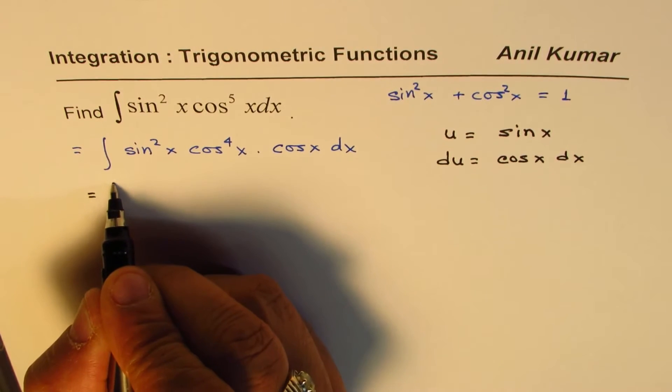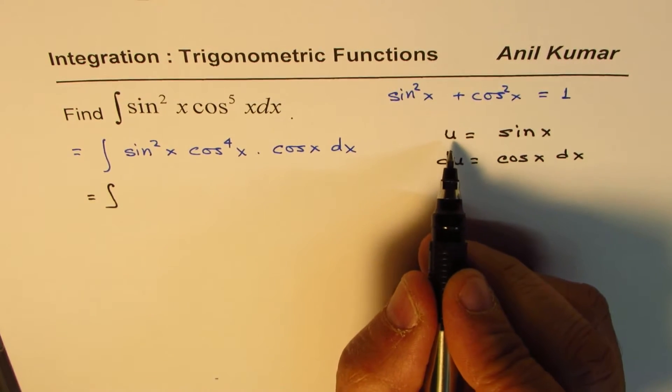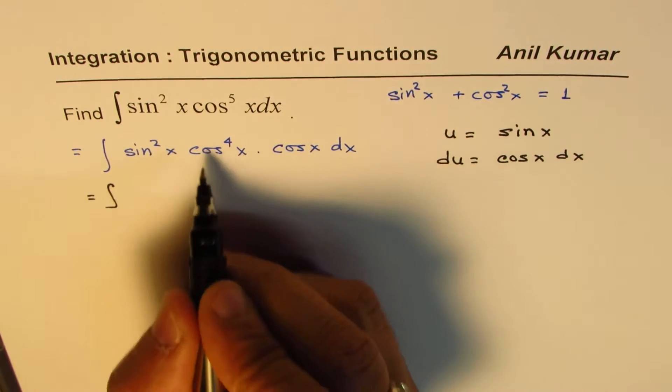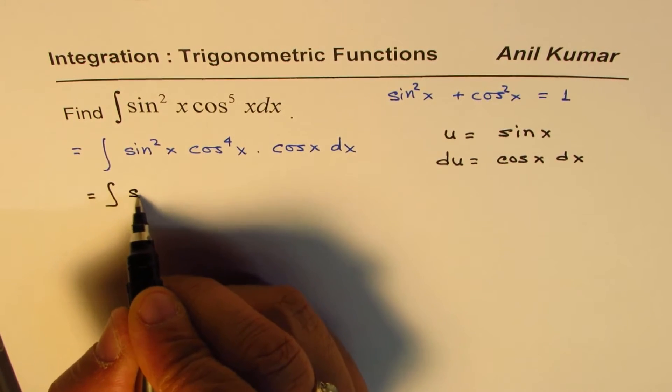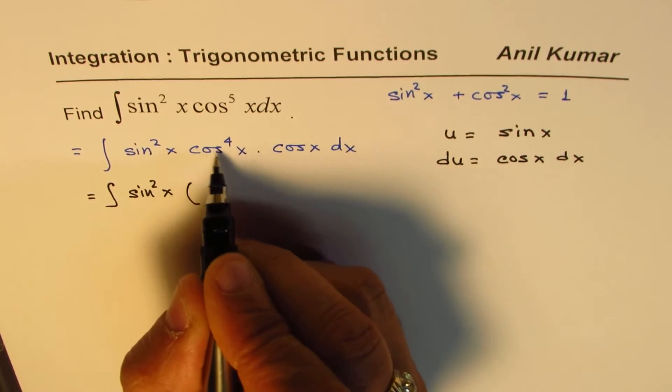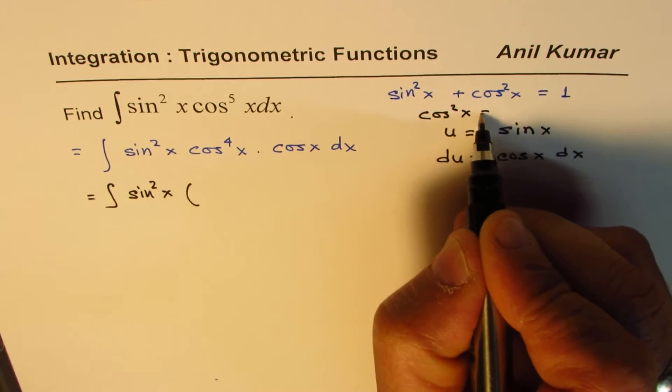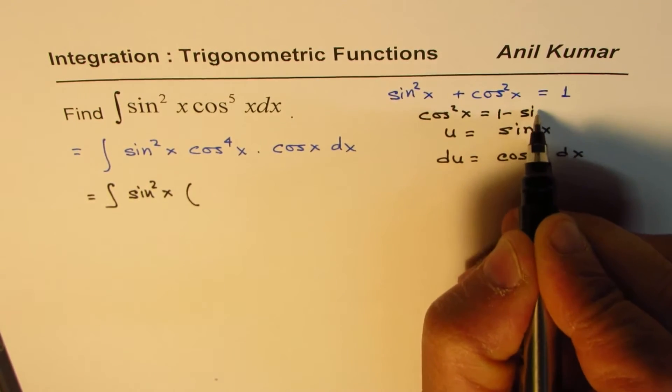Let's now continue. So now we can write this as, since we have substituted u as sine x, we don't want cosine here. So we write this as sine square x. Instead of cos, we can write this as cos square x equals to 1 minus sine square x.